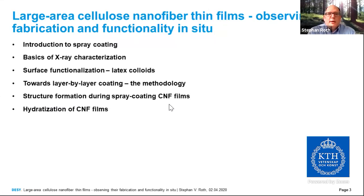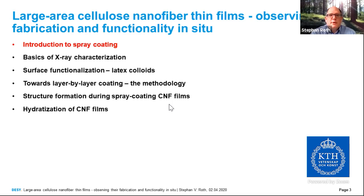The outline of my talk is as follows. First, I give a short introduction into spray coating. Then I will present the basics of X-ray characterization. As a first application example of spray coating, I show surface functionalization using latex colloids. Then I show towards layer by layer coating — the methodology for producing multi-layer systems using spray coating. Then we go into the structure formation during spray coating of cellulose nanofibril films, and finally we look into the hydration of the installed CNF films, which is very important if you want to functionalize the CNF surface due to its affinity to water.